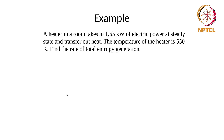To look at an example: there is a heater in a room. It takes in 1.65 kW of electrical power at steady state and transfers out heat. The temperature of the heater is 550 K. We are asked to find the rate of total entropy generation.